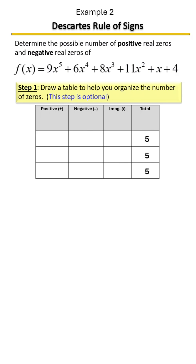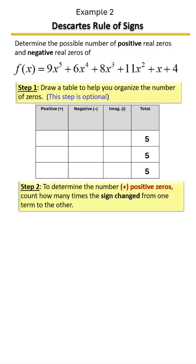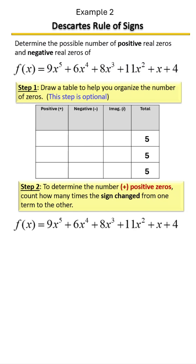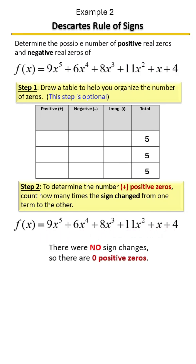Next, we're going to start with determining how many positive zeros we have. All we have to do is look at the polynomial the way it is and see how many times the sign changes. In looking at this polynomial, all of the signs are positive, which means there were no sign changes. So that means we're not going to have any positive real zeros — we put a zero here.